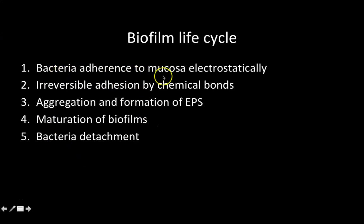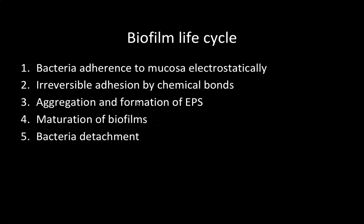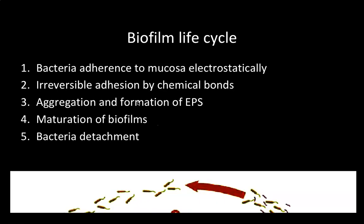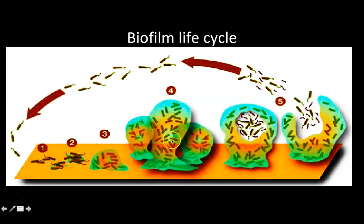The five stages are: first, bacterial adherence to mucosa electrostatically — this is the planktonic form and this stage is reversible; second, irreversible adhesion by chemical bonds; third, aggregation and formation of EPS; fourth, maturation of the biofilm; and fifth, bacterial detachment.